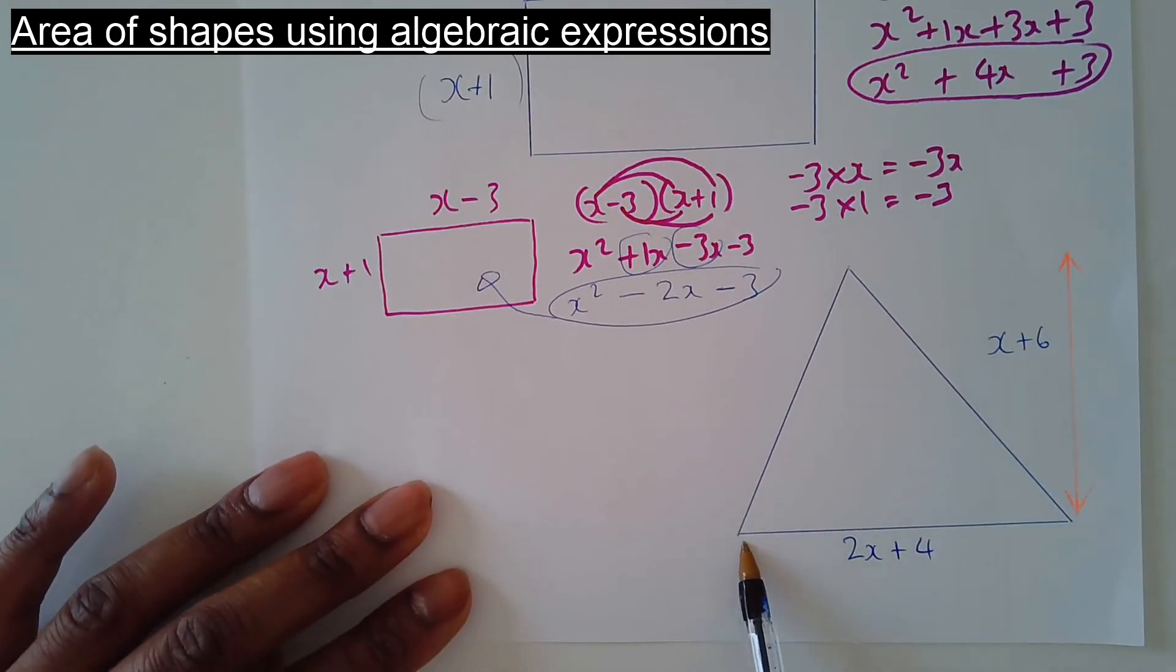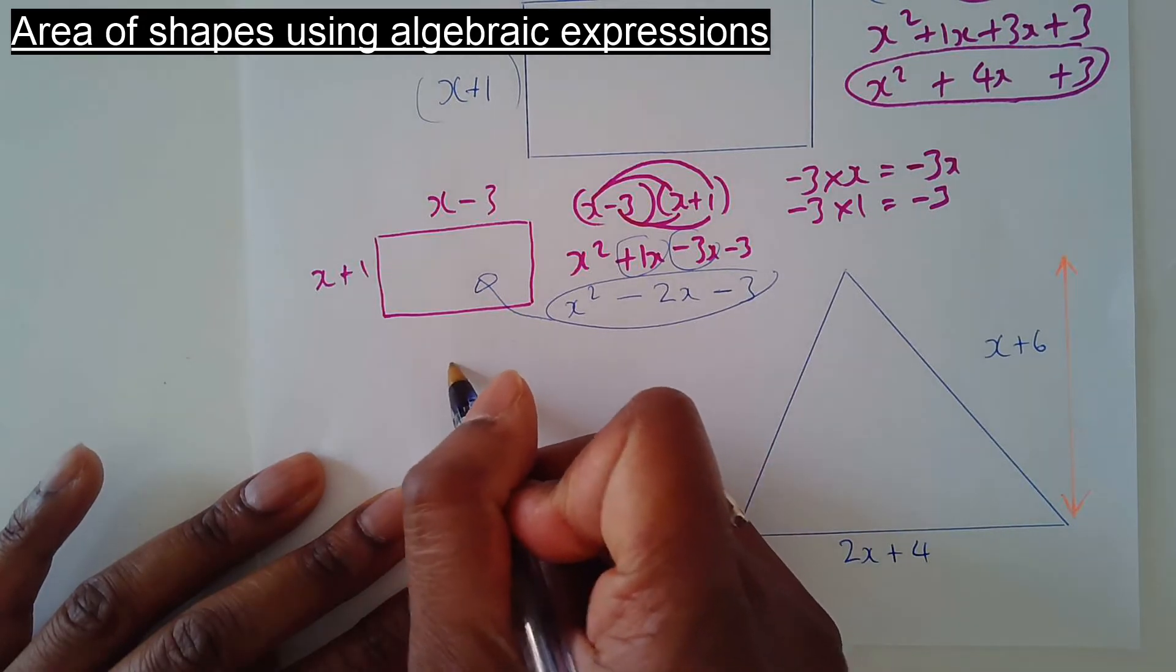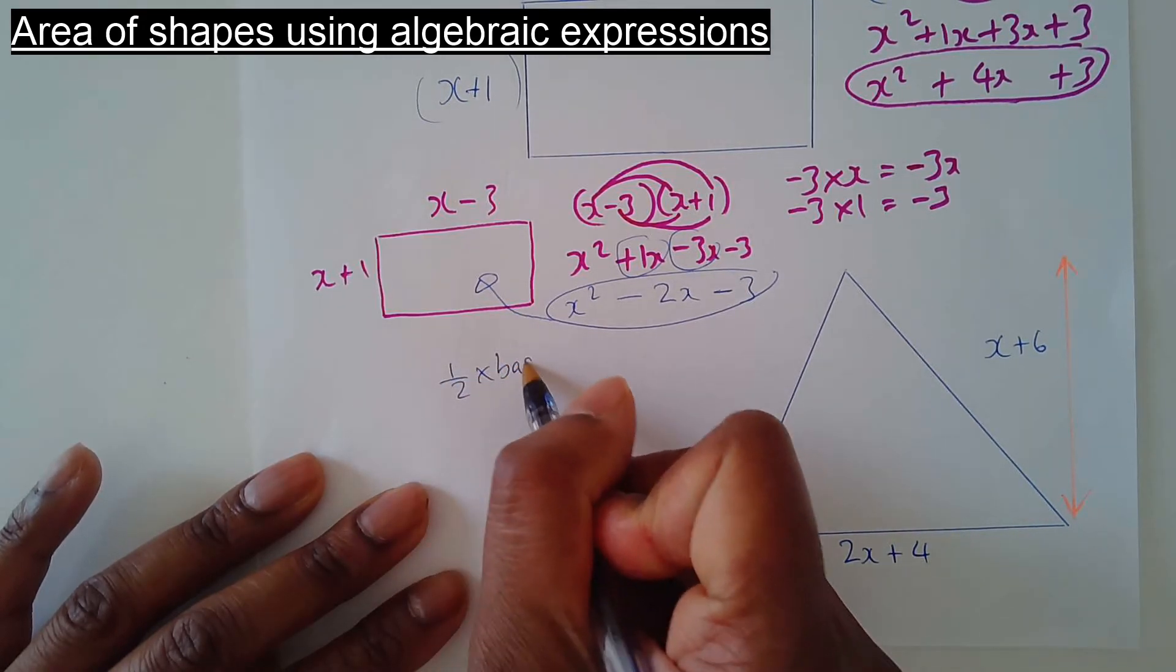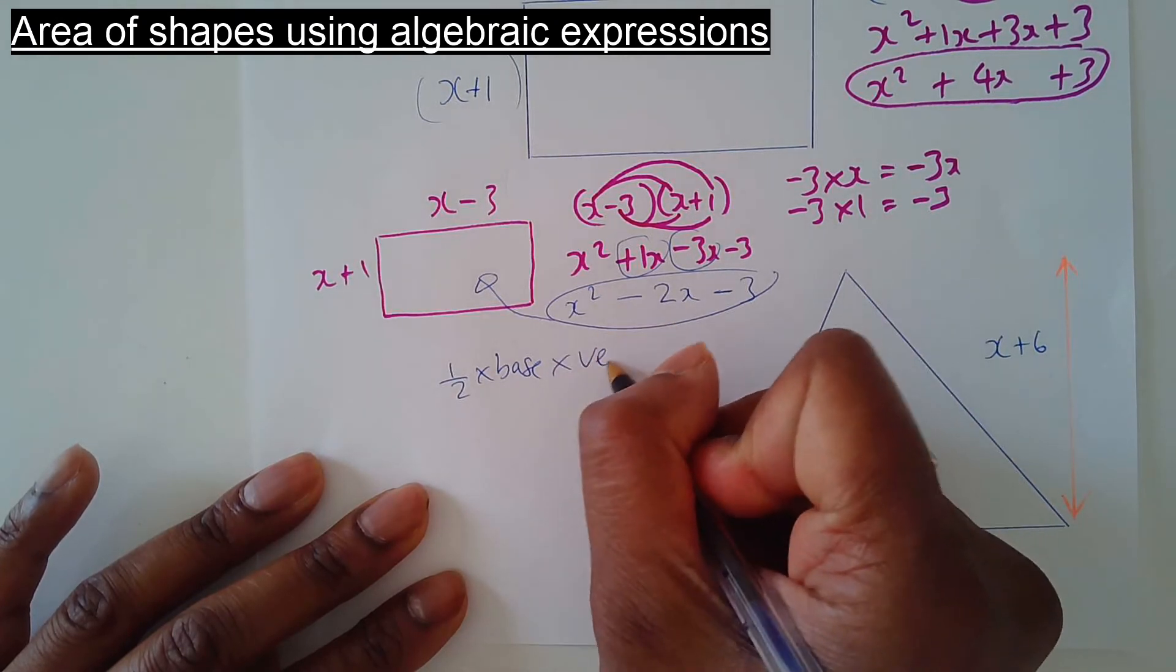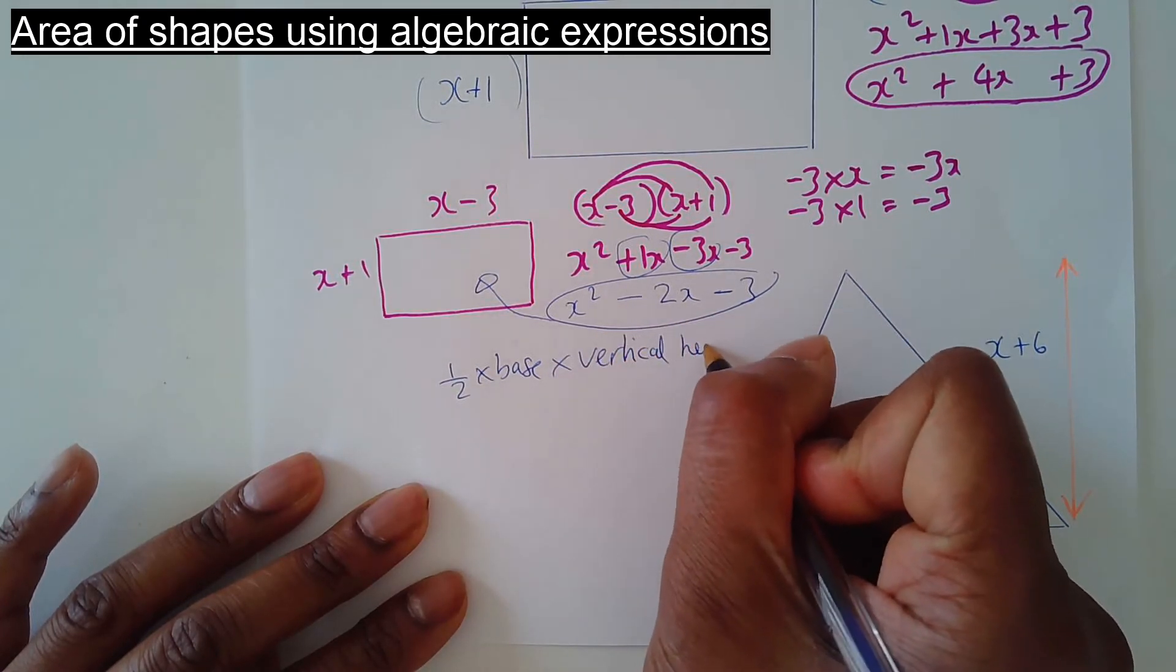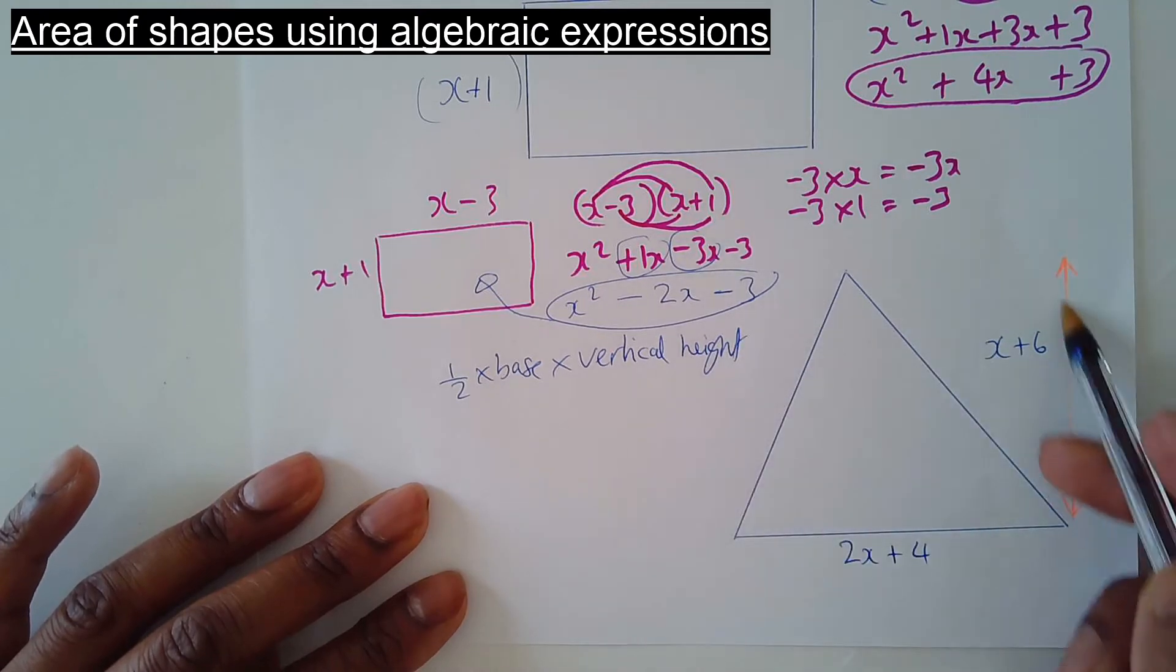To work out the area of a triangle, it's base. Remember the formula? Half times base. This is the base, times the vertical height, which is this bit here.